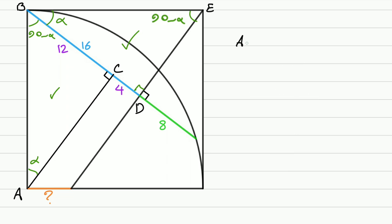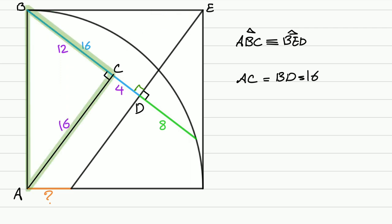So we can say the triangle ABC is congruent with the triangle BED. That means the segment AC is equal to the segment BD, and that's 16. So let's write it here: 16.